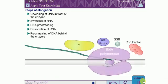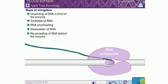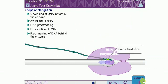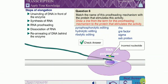Elongation: Help this bacterial cell form a functional RNA transcript. Question 5: Which enzyme or enzymes are responsible for these activities during elongation? Question 6: Match the name of this proofreading mechanism with the protein that stimulates this activity.